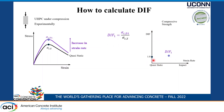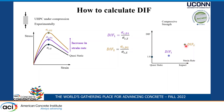The quasi-static reference is 1.0 on the DIF axis, and higher strain rates lead toward impact loading. If you increase the strain rate again, you calculate a second DIF factor at a higher strain rate. Once you have enough points, you can connect them and develop your model from this.